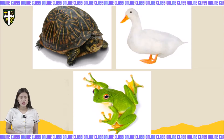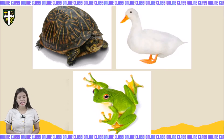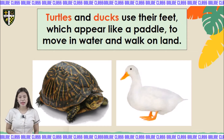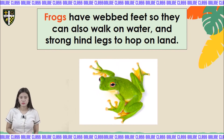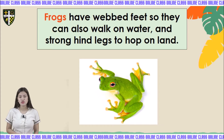Look at the legs of dogs, turtles, and frogs — they have webbed feet. These animals can walk on land and in water. Turtles and dogs use their feet, which appear like a paddle, to move in water and walk on land. Frogs have webbed feet so they can also walk in water, and strong hind legs to hop on land.